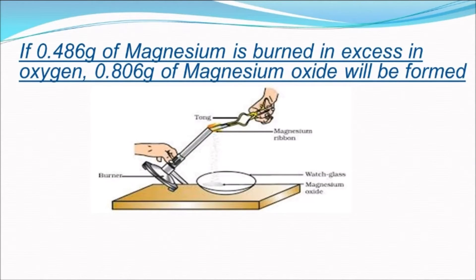For example, if we burn 0.486 grams of magnesium in excess oxygen, we will get 0.806 grams of magnesium oxide.